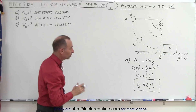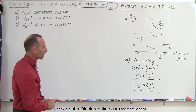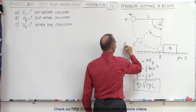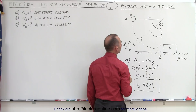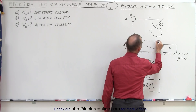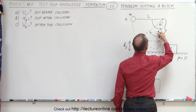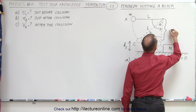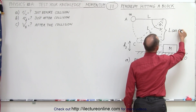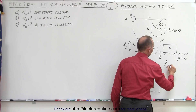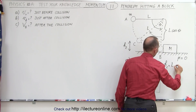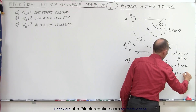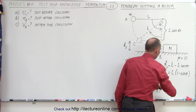That V initial is the velocity of the pendulum right before it hits the block. For part B, the pendulum bounces back and reaches height H2. Drawing a triangle, the hypotenuse is L and the adjacent side gives a height of L times cosine of theta, so H2 equals L minus L·cosθ, or L times (1 minus cosine theta). That is the height to which the ball bounces back up.